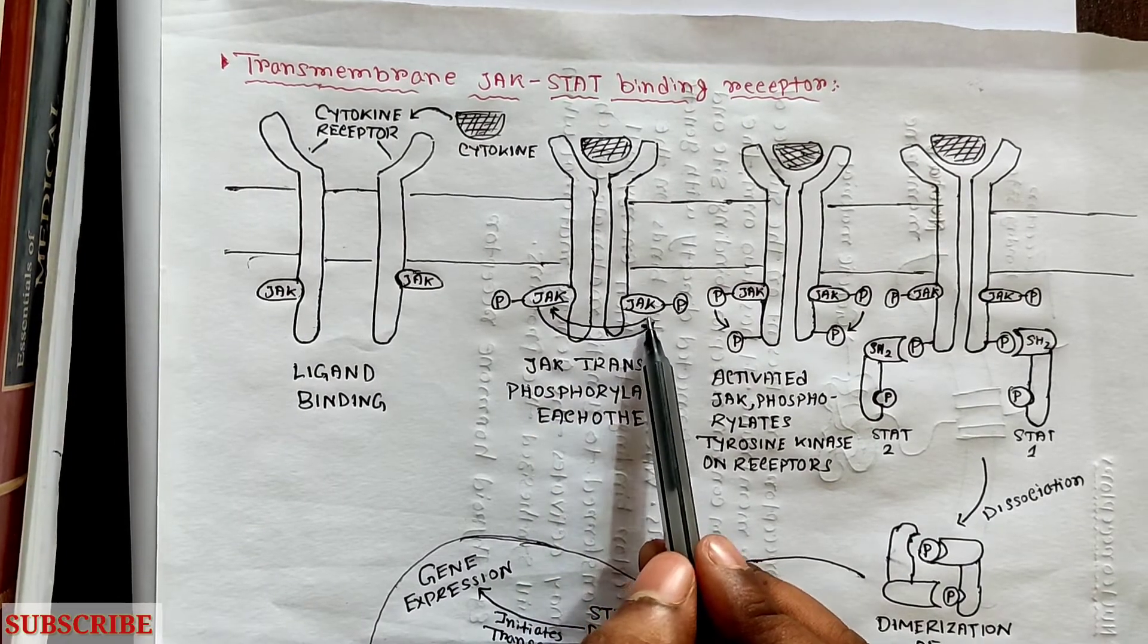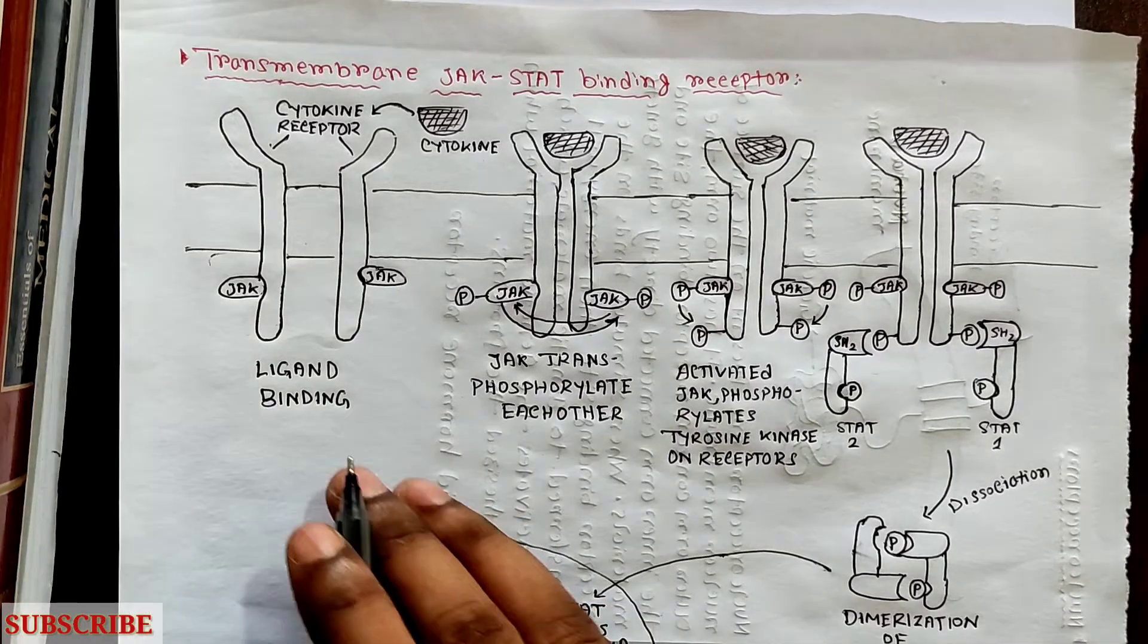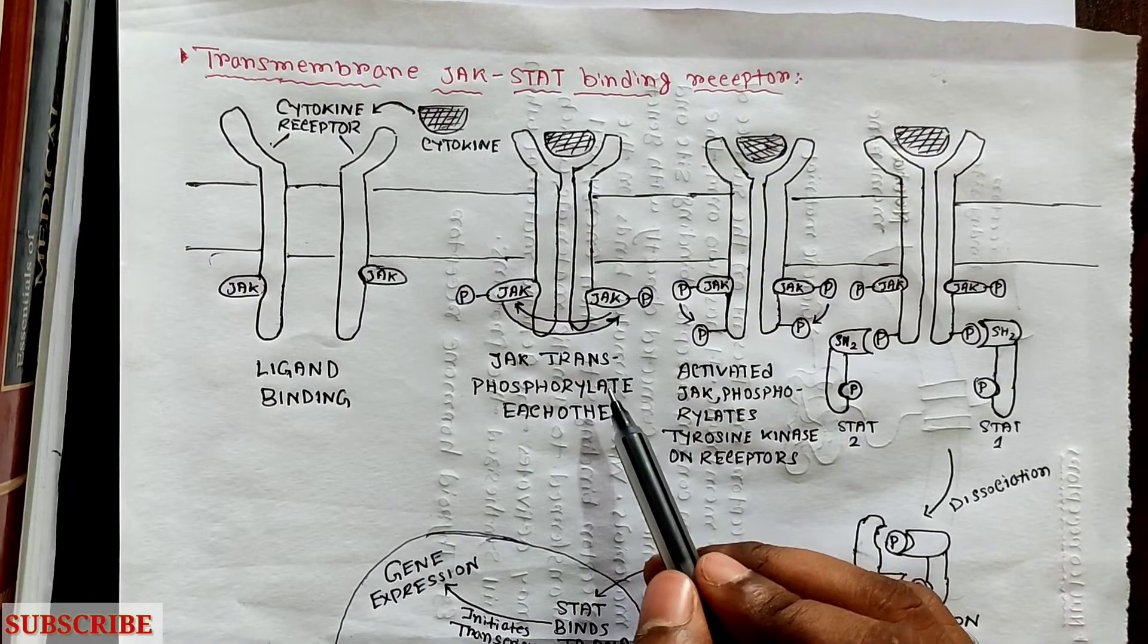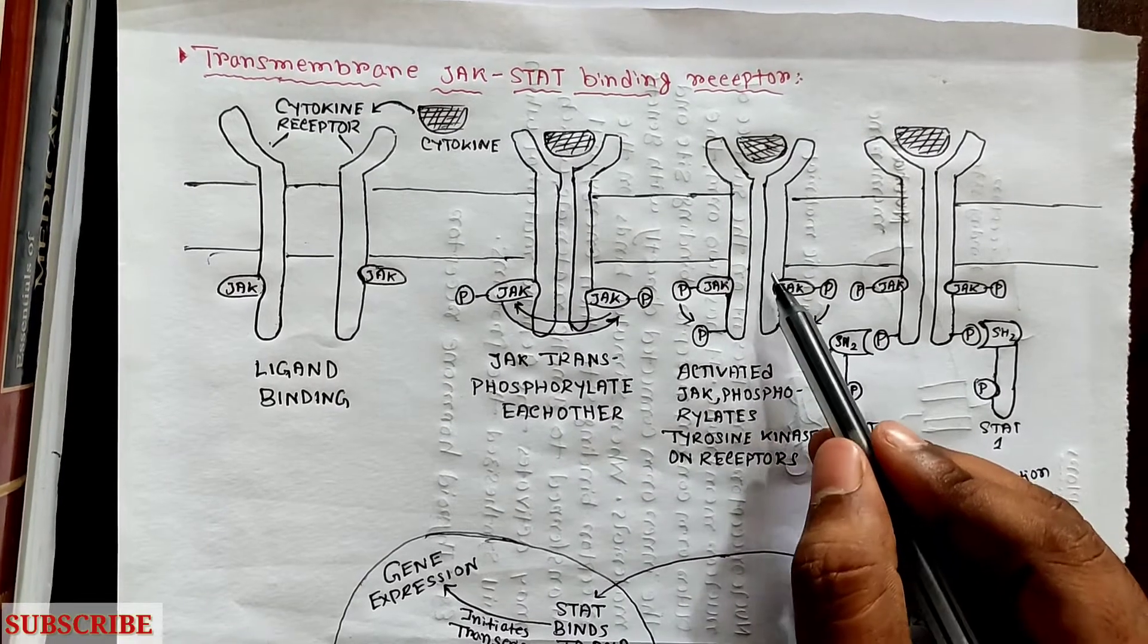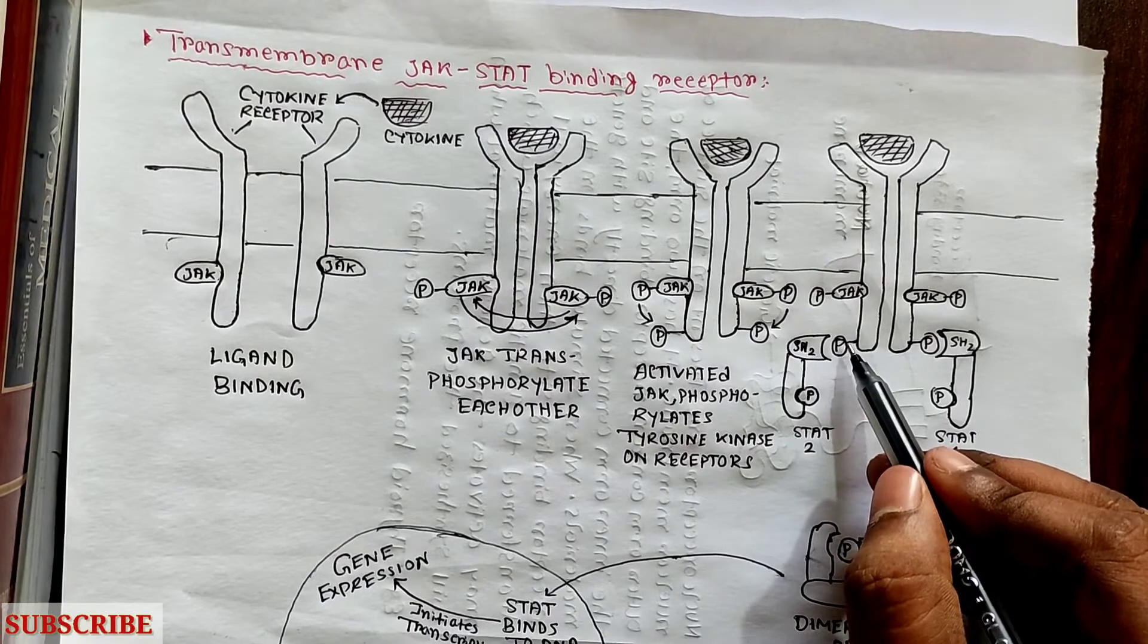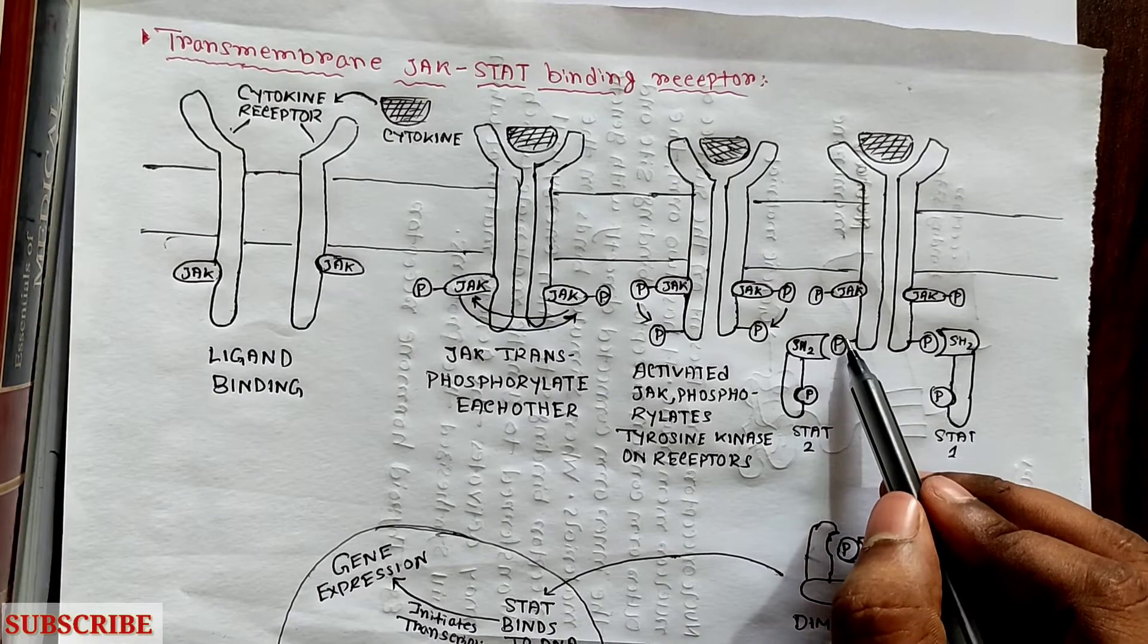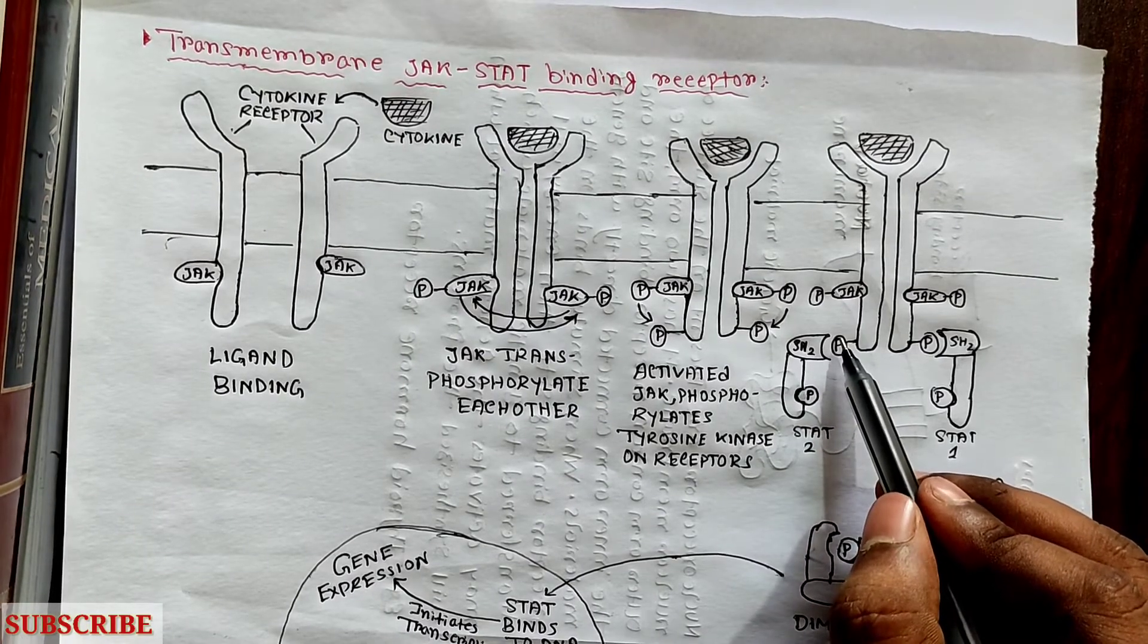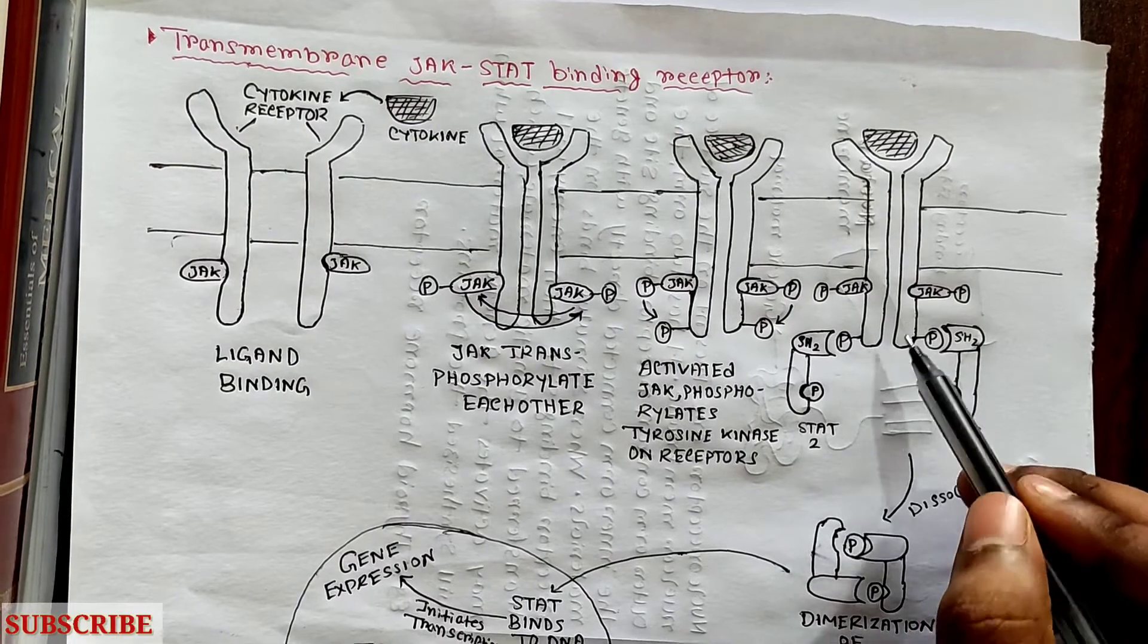In the next step, the activated JAK phosphorylates the tyrosine residues. In further step, the STAT will bind with the phosphotyrosine with SH2 domain.